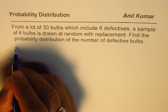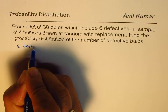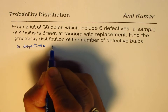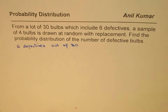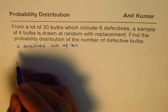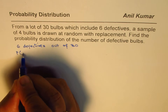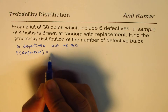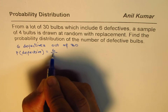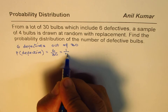In this particular case, we have 6 defectives out of 30. So what is the probability of a defective piece? The probability of a defective piece is equal to 6 out of 30, which can be simplified to 1 over 5.